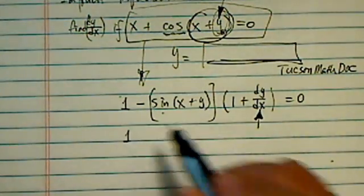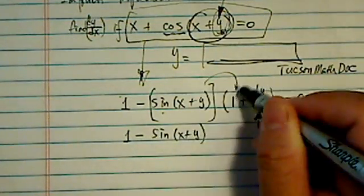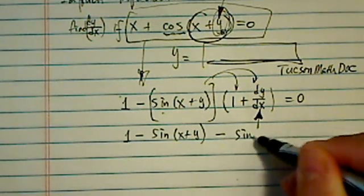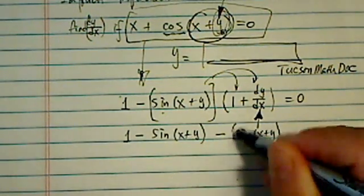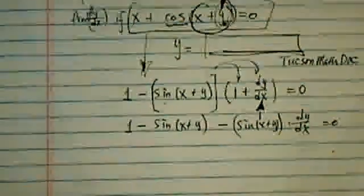We have 1 minus sine x plus y. I'm going to just distribute it in here. Minus sine of x plus y times what I'm looking for, which is dy/dx. This whole thing is equal to zero.